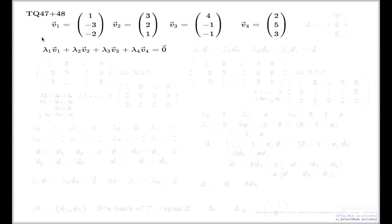In principle, if you can come up with a set of coefficients that vanishes this linear combination without any computation, that would be enough to convince everyone that the system is linearly dependent. However, if you can't come up with them — which is what normally happens — we look at the left-hand side, treating each vector as a column vector.